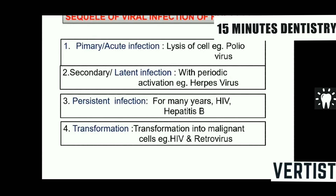The various viruses have the following sequels found in different diseases. The infection caused by a virus is primary when there are no antibodies — it is usually an acute infection. After acute infection, the viruses may remain latent and can be reactivated by unfavorable conditions of the host, leading to a secondary infection.